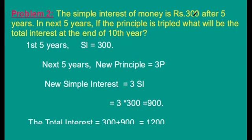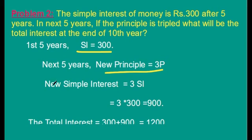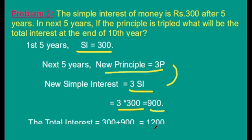See one more example. Simple interest on a sum is 300 rupees after five years. In the next five years, if the principal is tripled, what will be the total interest at the end of the tenth year? For the first five years, simple interest is 300 rupees. In the next five years, the new principal is 3P. When the principal triples, the simple interest also triples. So new simple interest = 3 × 300 = 900 rupees. Total interest = 300 + 900 = 1200 rupees.